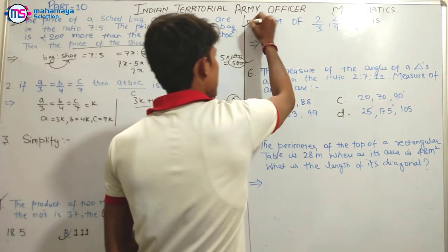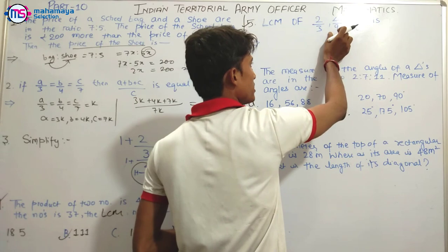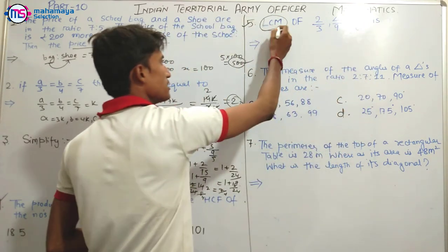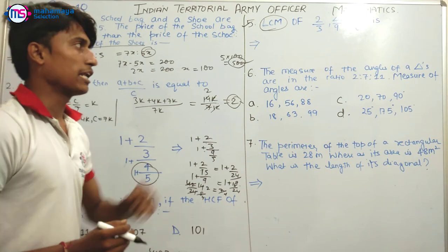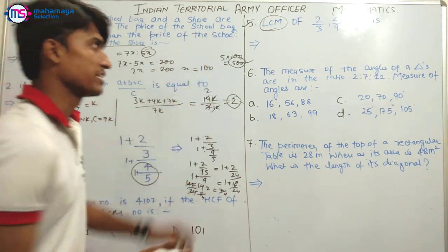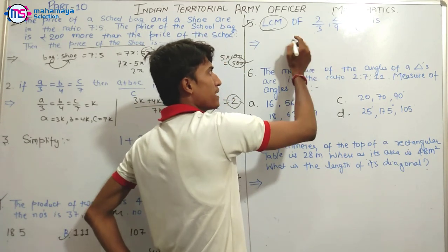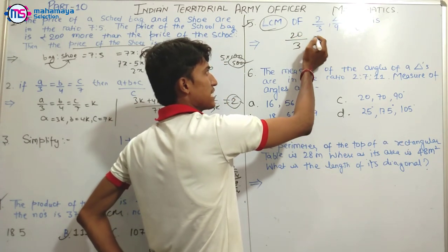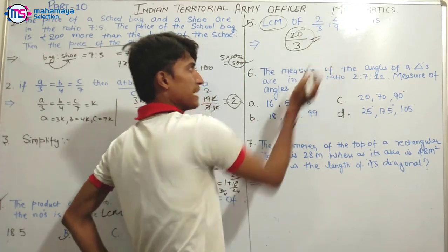In the next question, the LCM is given for 2, 3, 4, 9, 5, 6. When you are given the LCM, the bottom gives you the HCF. Then you will have 20 and then 3, so 20 by 3 is the right answer.